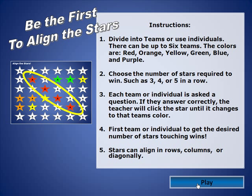There are six colors available to be chosen as teams: red, orange, yellow, green, blue, and purple. First you need to choose the number of stars required to win — how many stars you have to connect either in a row, in a column, or in a diagonal in order to win.